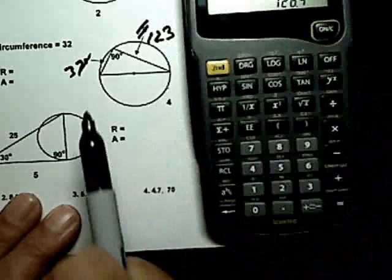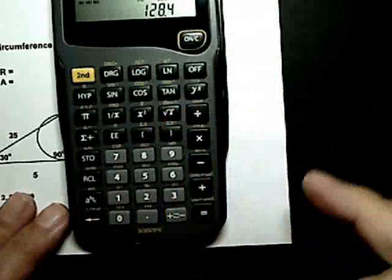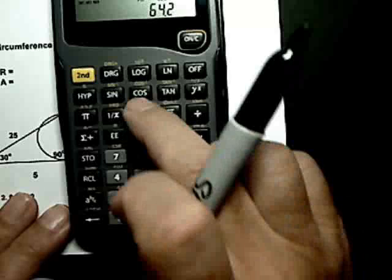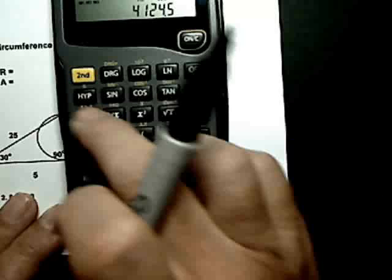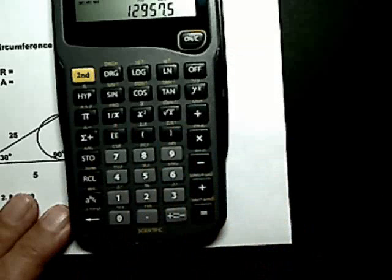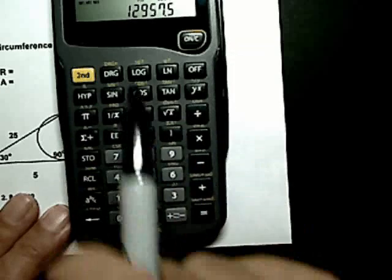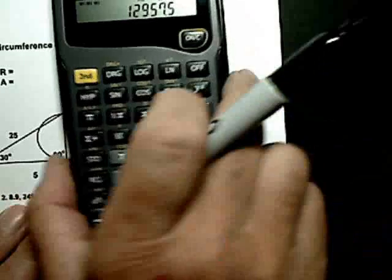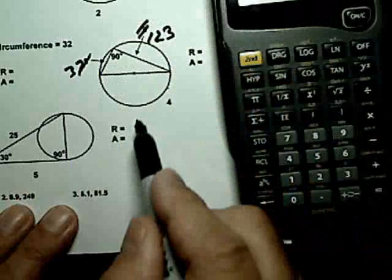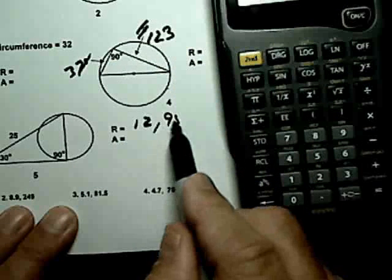Then you divide by 2 and that gives you the radius. Now you've got the radius. You've got to square it. Multiply that times pi and now you've got the area, which will be 12,958 approximately. Now, that's a lot of work. 12,958 square units. If I didn't make a mistake, I'll go back and check it later and you can too.